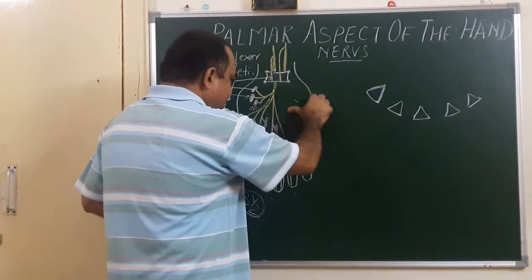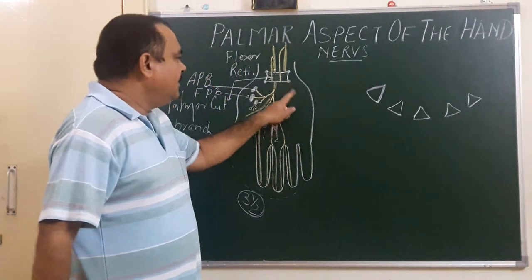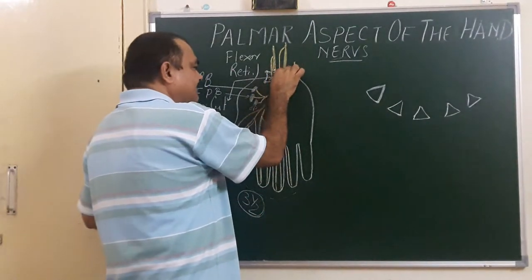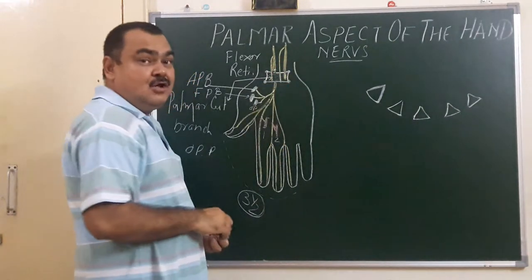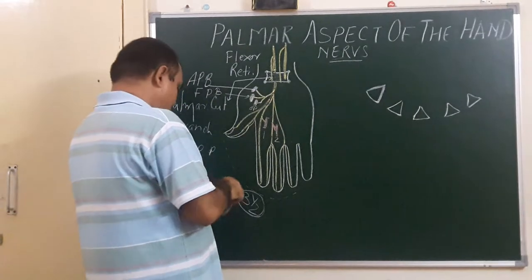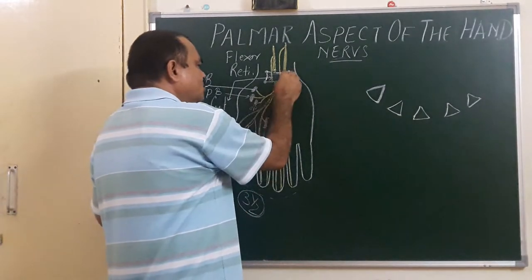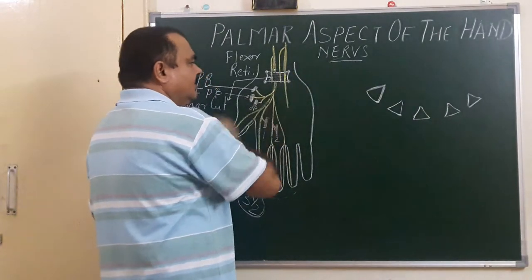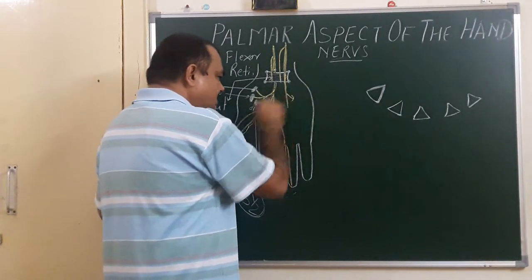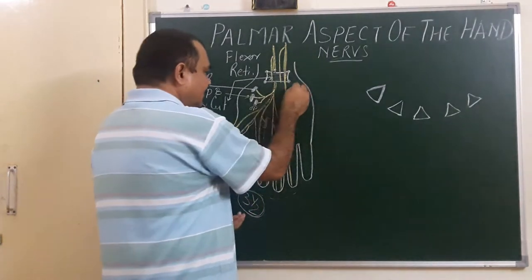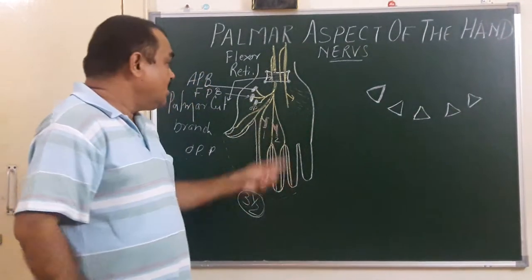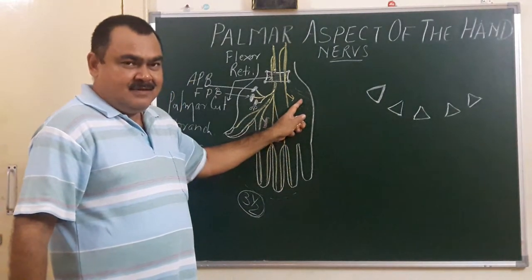The ulnar nerve passes superficial to the flexor retinaculum, lying just lateral to the pisiform. Here it gives a superficial branch. This superficial branch gives supply to a muscle — the palmaris brevis muscle. So the superficial branch gives supply to palmaris brevis.